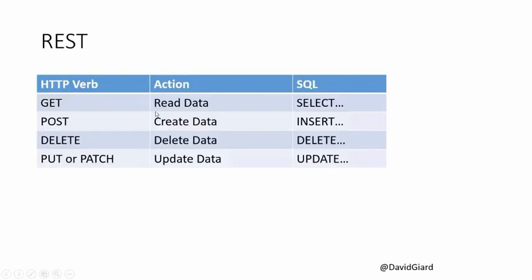Behind the scenes, the HTTP verbs map to SQL statements: GET becomes a SQL SELECT, POST becomes a SQL INSERT, DELETE becomes a SQL DELETE, and PUT or PATCH becomes a SQL UPDATE. It's always the same URL, and we change the verb to indicate our intent. This is convention — you could write code with a GET request that deletes data, but that would confuse your end users. It's good practice to follow accepted industry conventions.